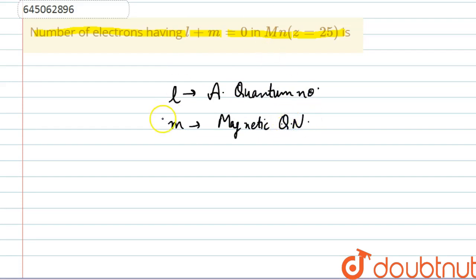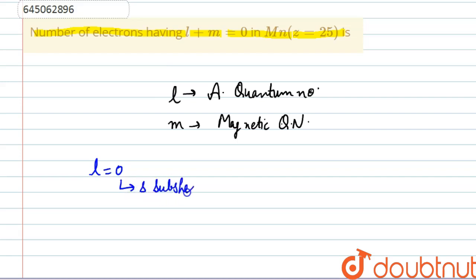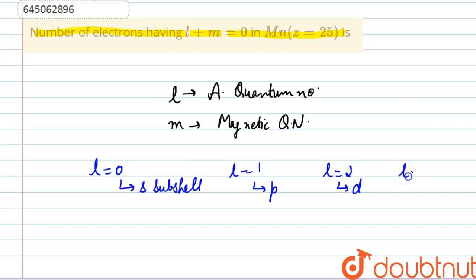If the value of L is zero, it refers to the S subshell. If the value of L is 1, it refers to the P subshell. If it is 2, it refers to the D subshell, and similarly if it is 3, it refers to the F subshell.